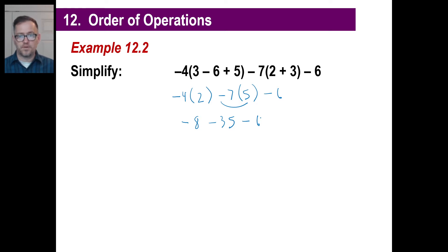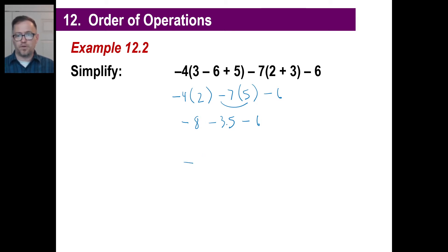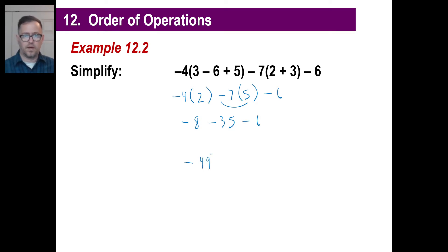Negative 4 times 2 is negative 8. Negative 7 times positive 5 is negative 35. And minus 6 is just what it is. You're adding three negatives, so you know the answer is going to be negative. Just go 8 plus 35 is 43, plus 6 is 49 — so negative 49.